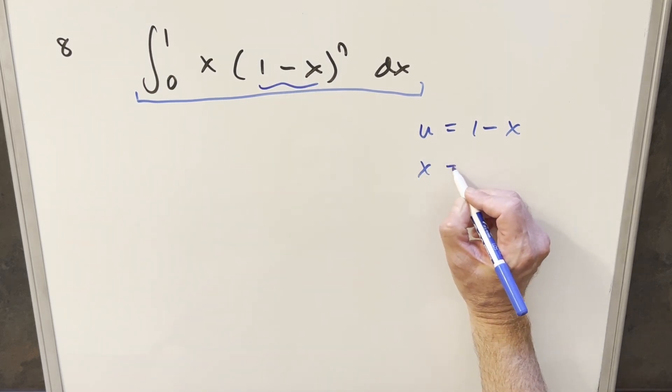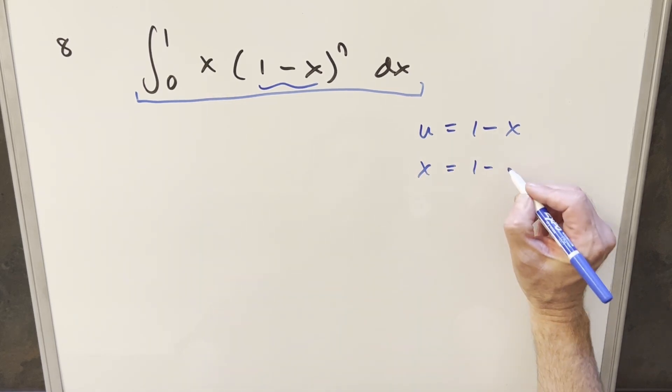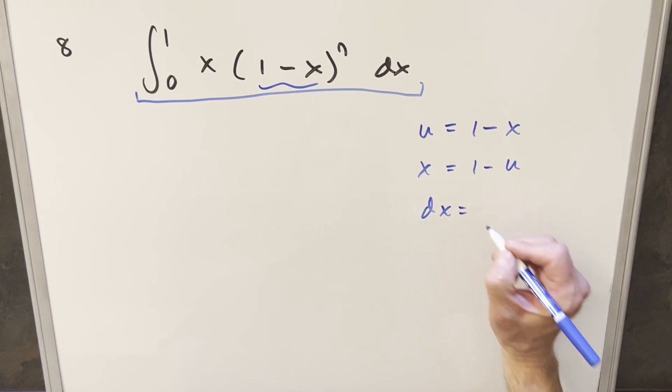If we do that, let me get a value for x because we're going to need it over here. x is going to be the same thing as one minus u. Take a derivative, dx is going to be minus du.